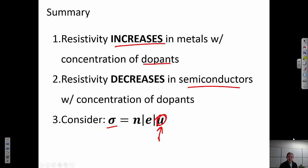On the other hand, in semiconductors, the resistivity is going to decrease with the concentration of dopants. And in this case, it's because largely we're changing n. We're changing the number of carriers and we're having a much bigger impact on n than we are on mobility in the system.